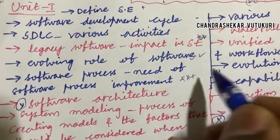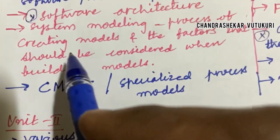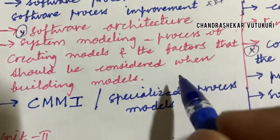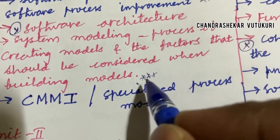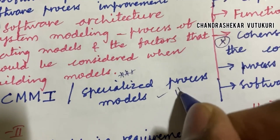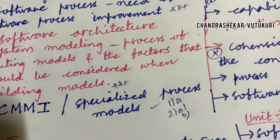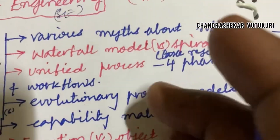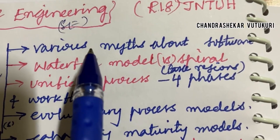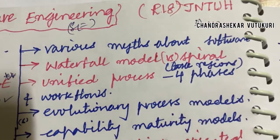System modeling — the process of creating a model and factors that should be considered when building a model — is said to be one of the top most questions. CMMI and the specialized process models from this part will likely appear as 1A, 2A, or 2B questions. As this course is theory-based, you'll be getting two parts — two long questions such as 2A/2B and 3A/3B.